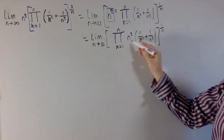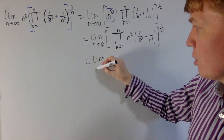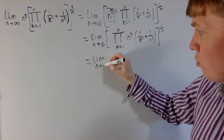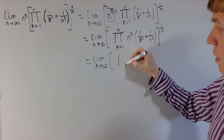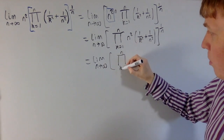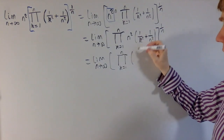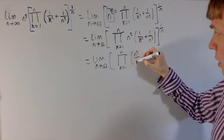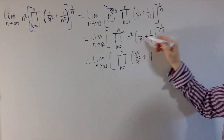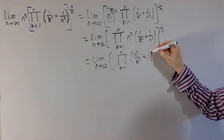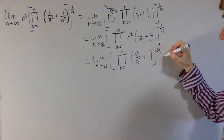So we've got now the limit as n goes to infinity of the product from k equals 1 to n. When we take n squared inside the bracket, this will give us something slightly nicer. We get the product, still from k equals 1 to n, of n squared over k squared plus 1 — your n squared and 1 over n squared cancel — and still all of this is raised to the power of 1 over n.